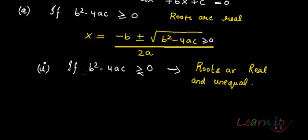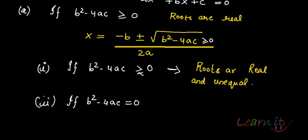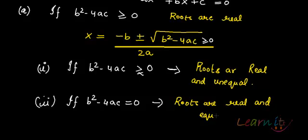The second case is when whatever is inside the square root equals zero — that is, b squared minus 4ac equals zero. The square root of zero is zero, so you get a single root which is minus b divided by 2a. In this case, the roots are real and equal, both equal to minus b over 2a.